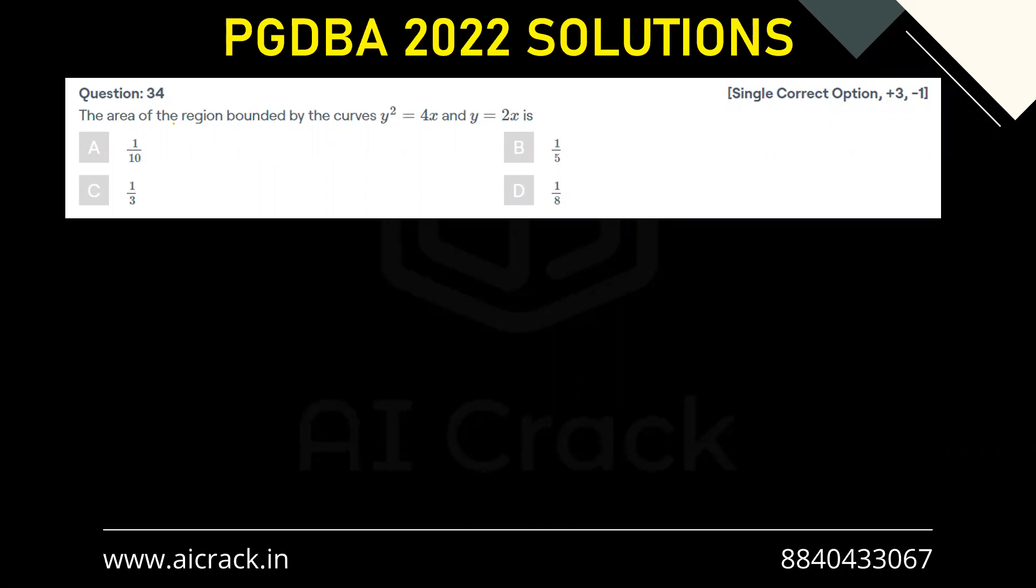Hi everyone, let's solve question number 34. The area of the region bounded by the curves y² = 4x and y = 2x. The curve given here is a parabola, and the second one is a straight line y = 2x. We have to find this area.